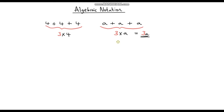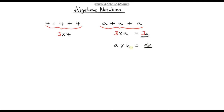Let's do another example, but this time instead of having a number multiplied by a letter, let's say we've got two letters being multiplied together. So let's say we've got a times b. Just like before, to simplify this we just remove the multiplication symbol. So we would write a times b as just ab. If you see ab, that just implies multiplication — it means a times b.